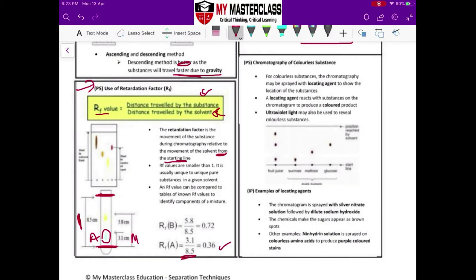And then your yellow dot over here, which is your B, this one, 5.8 over 8.5, this is 0.68.